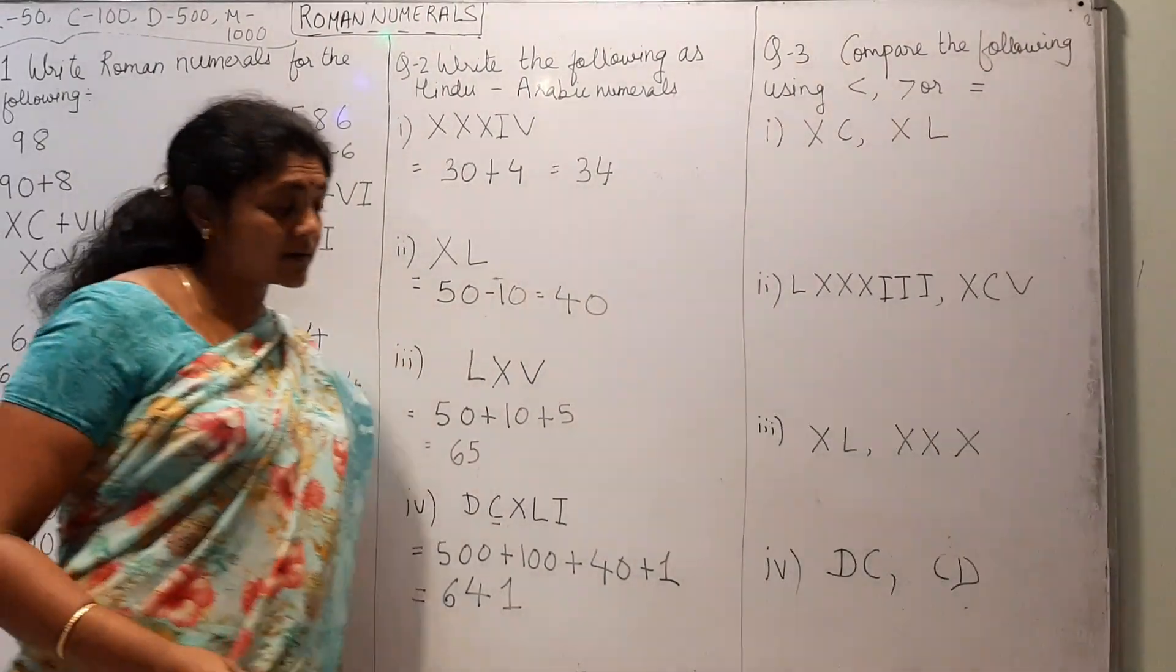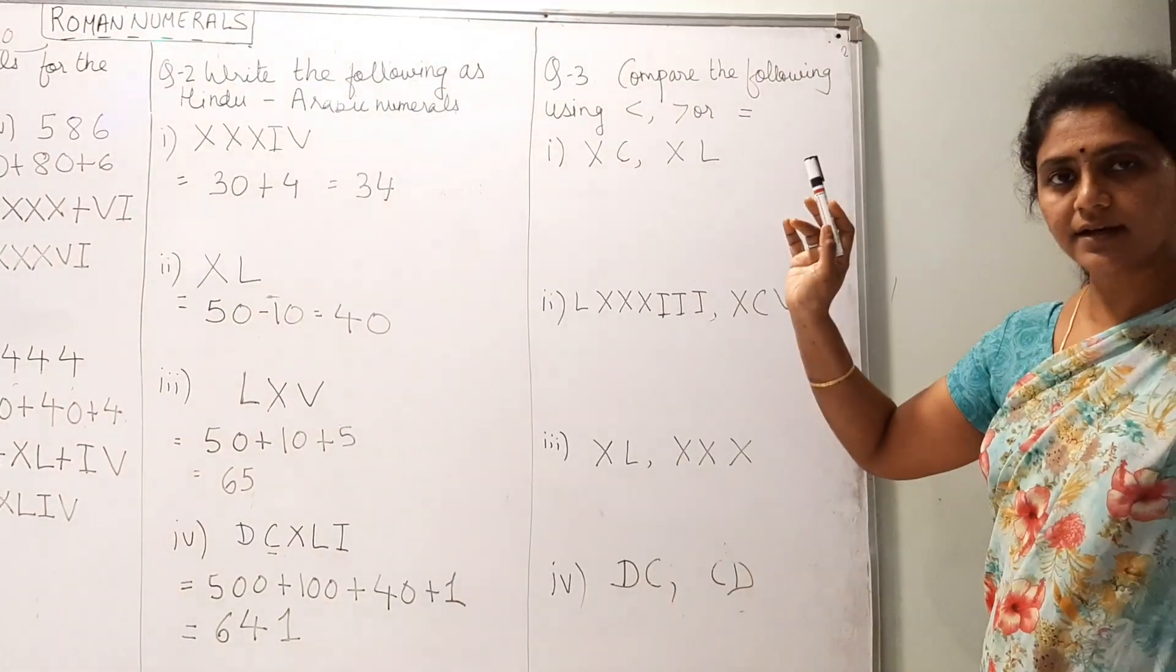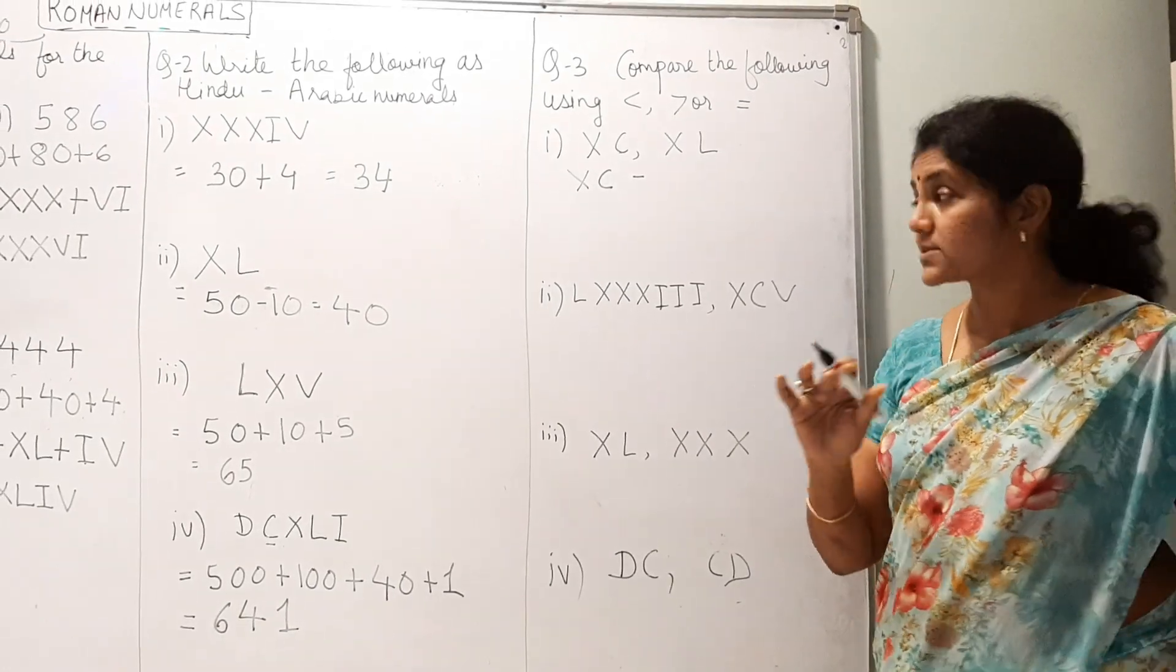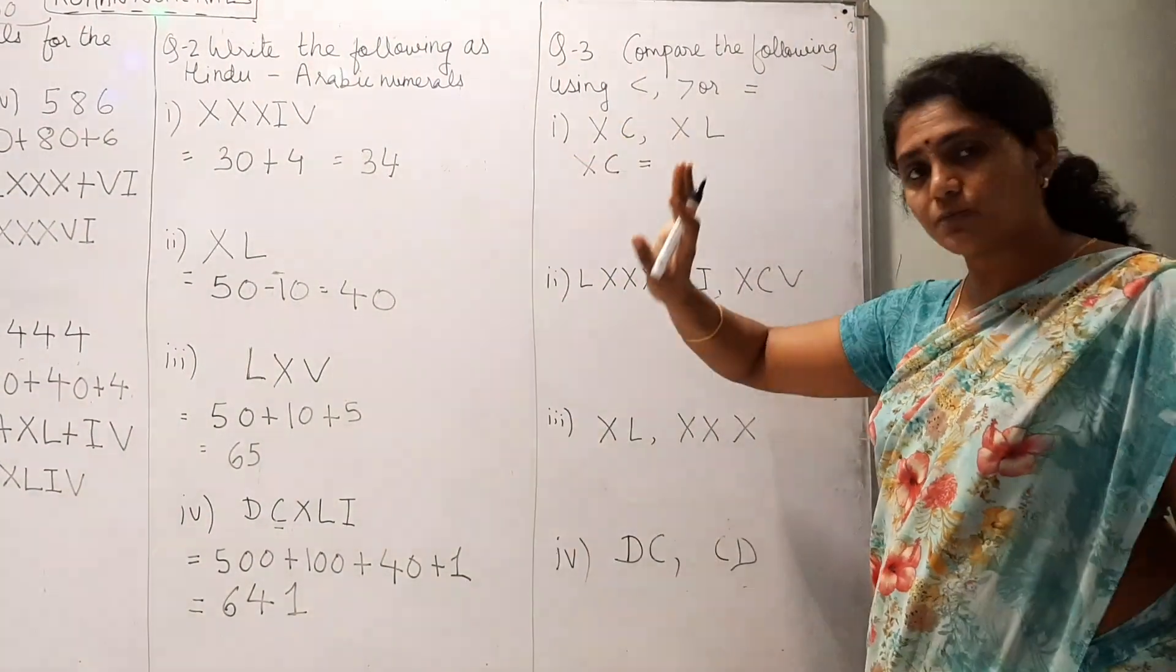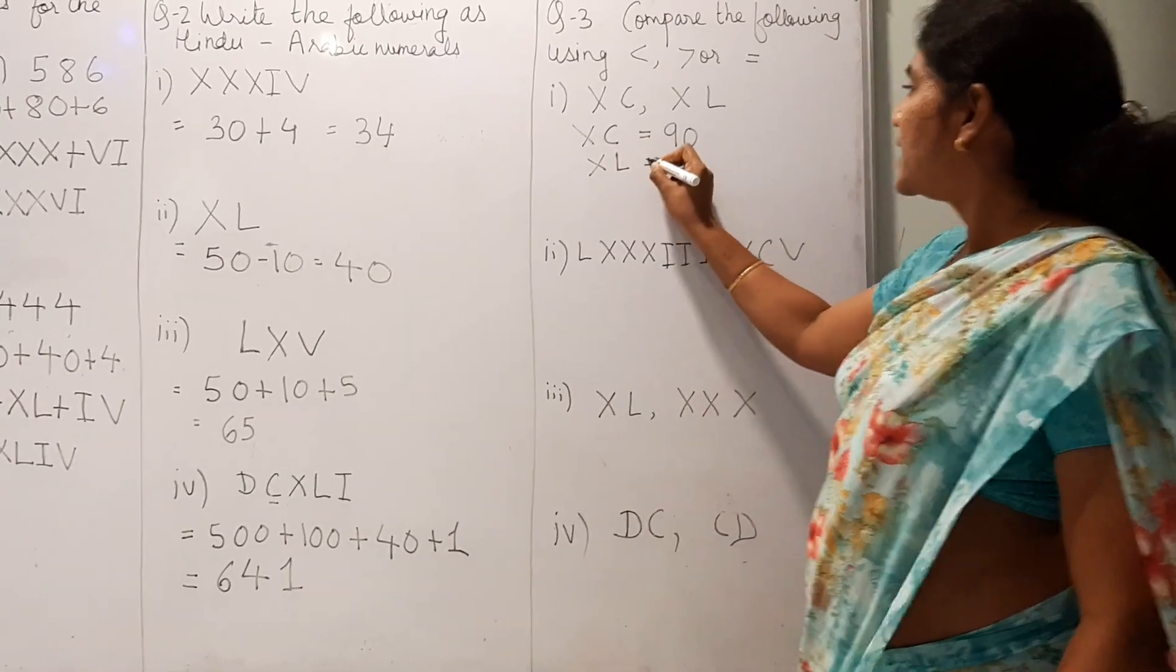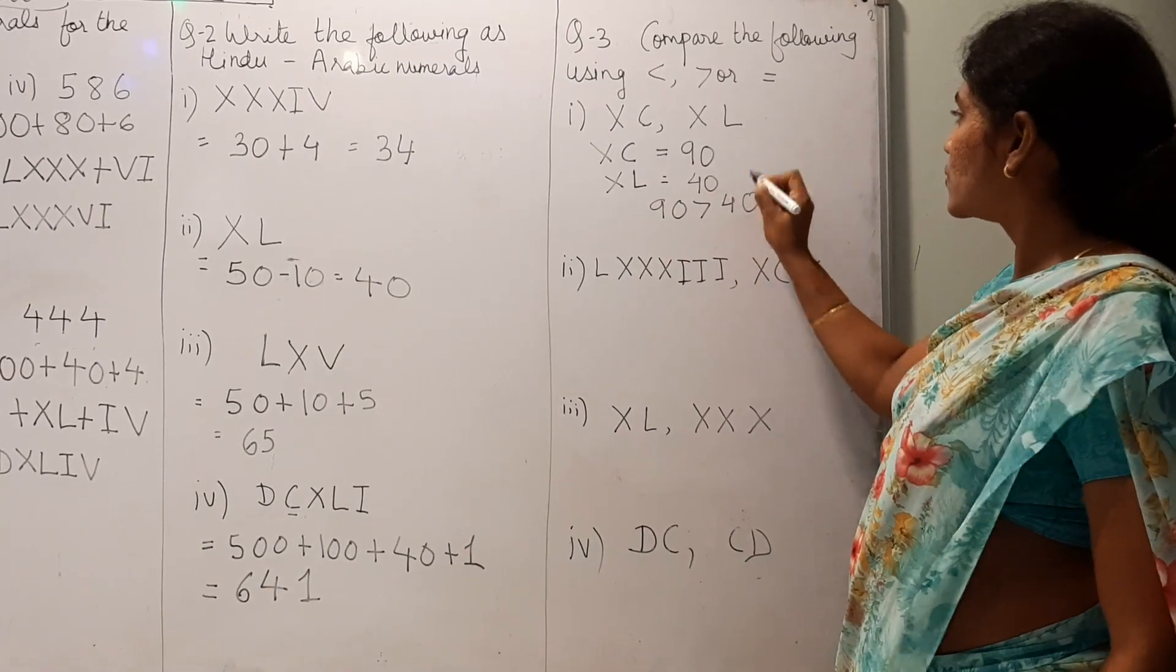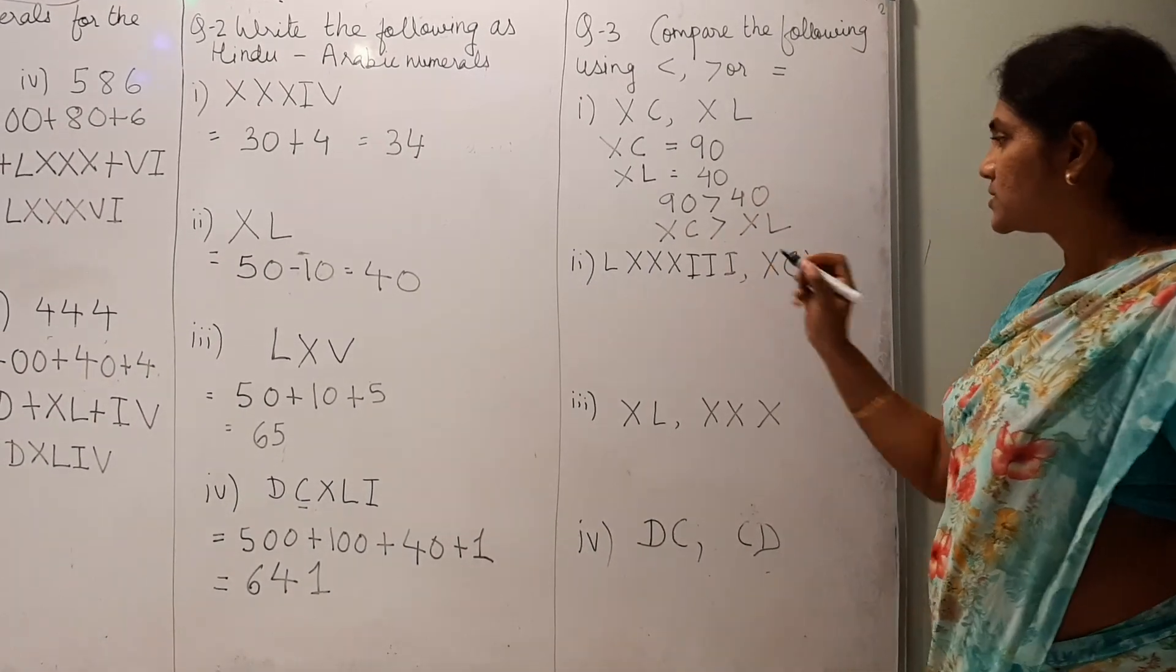Now, same concept. Only you have to compare. Compare the following using less than sign, greater than sign or equal to. Now, XC. First, comparing. Convert. In Hindu-Arabic numerals or in numbers. So, XC is equal to, this is 100, 10. 10 is to the left. Means, minus. 100 minus 10 means, 90. XL, this is L is 50, 50 minus 10 is 40. That means, 90 is greater than 40. So, you can write XC is greater than XL.